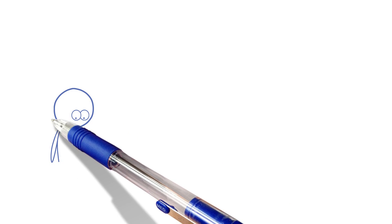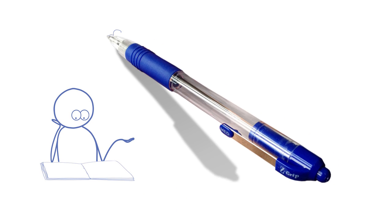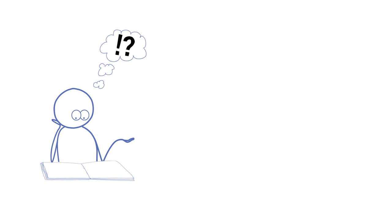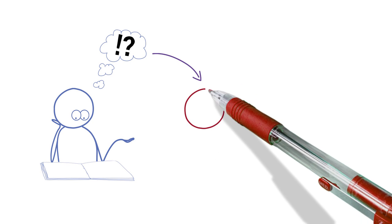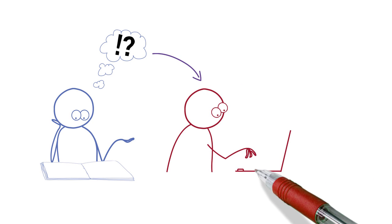Students are always being told that they need to read more critically, think more critically and write more critically. But how do you demonstrate that you are reading and thinking critically in your writing?